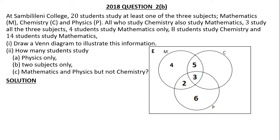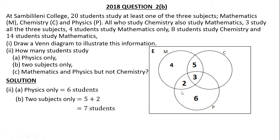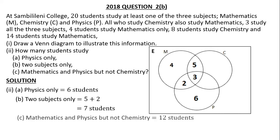How many students study physics only? Six students study physics only. How many students study two subjects only? We have 5 studying mathematics and chemistry, and 2 studying mathematics and physics, so 5 plus 2 gives 7 students who study two subjects only. For mathematics and physics but not chemistry: we have 4 who study mathematics only, 2 studying mathematics and physics, and 6 studying physics only — so 4 plus 2 plus 6 gives 12 students who study mathematics and physics but not chemistry.